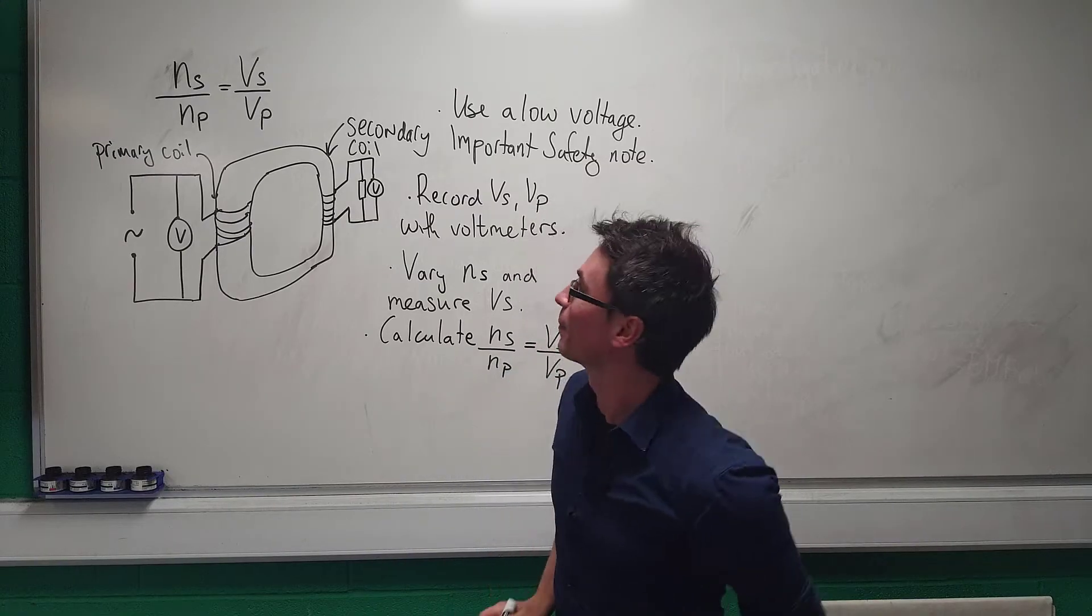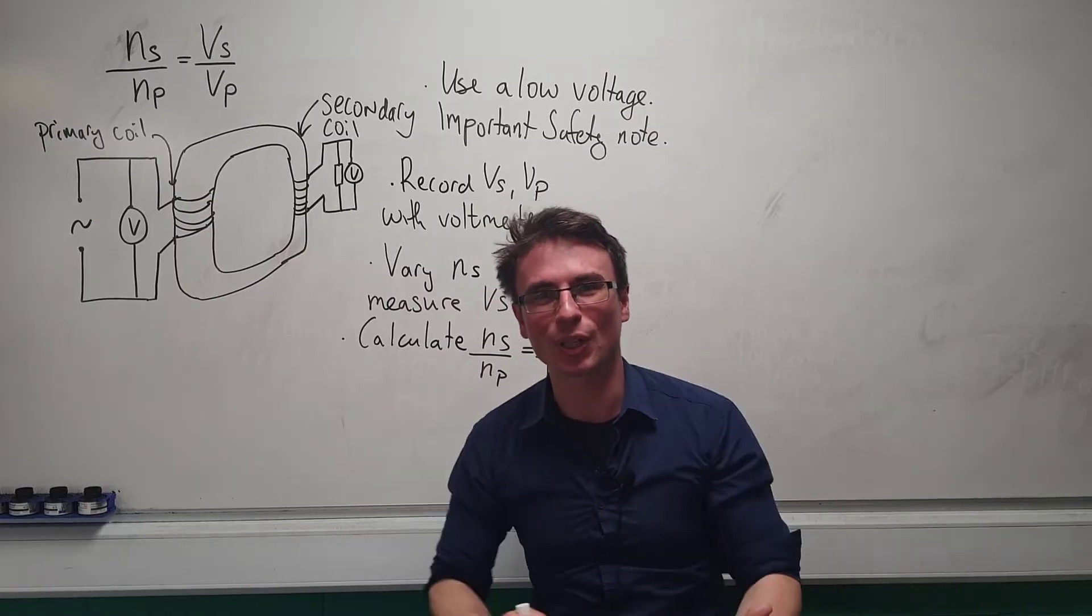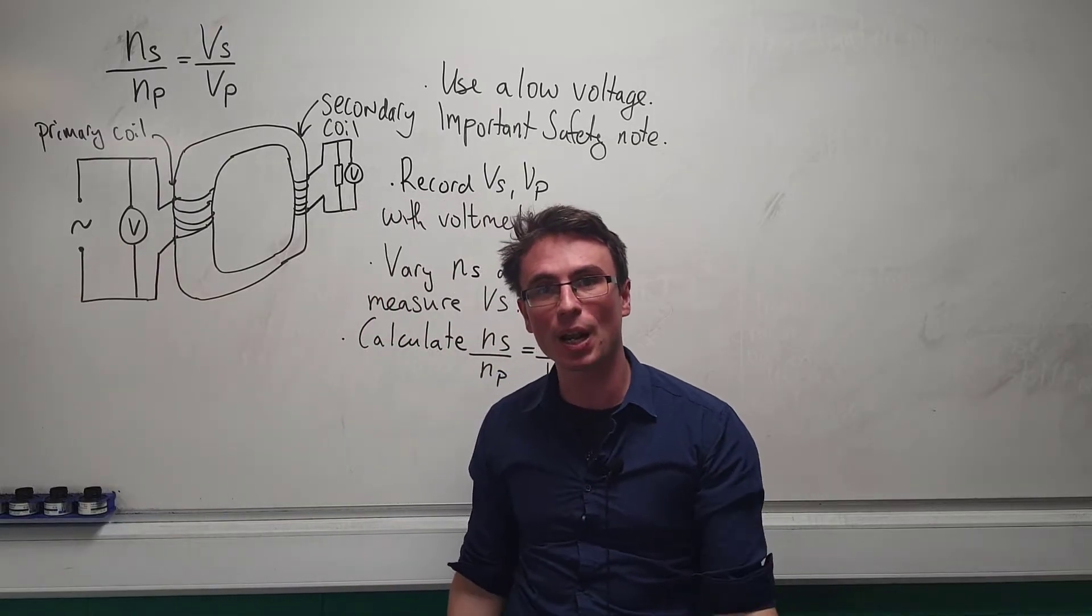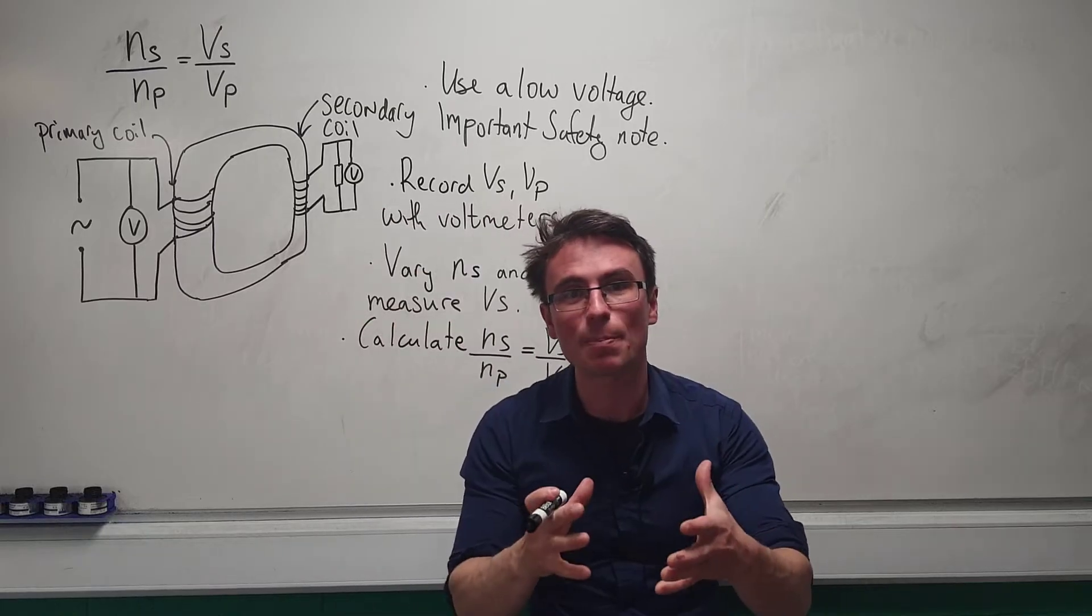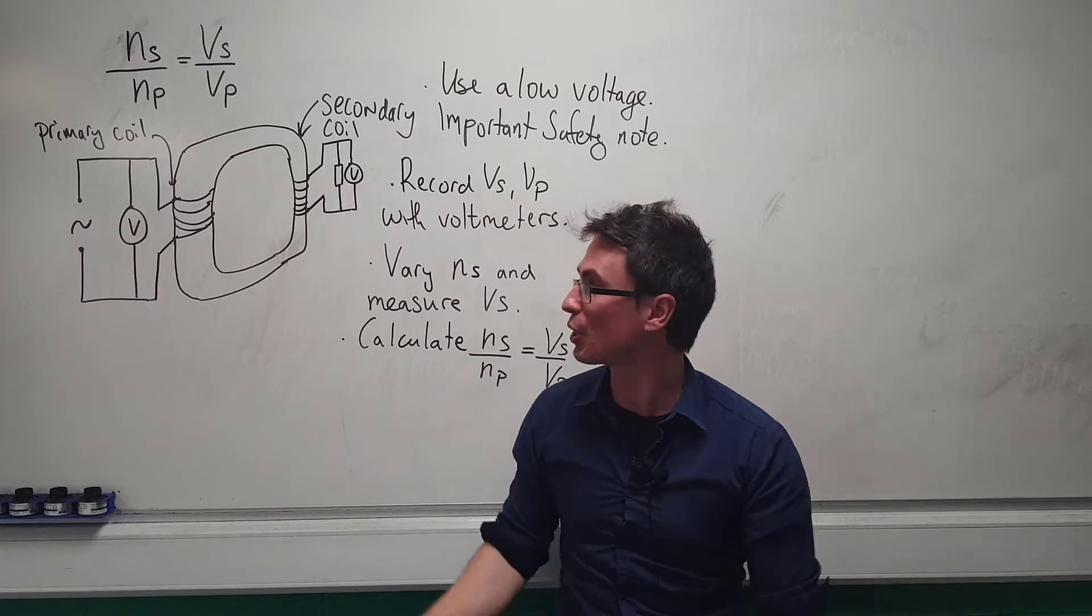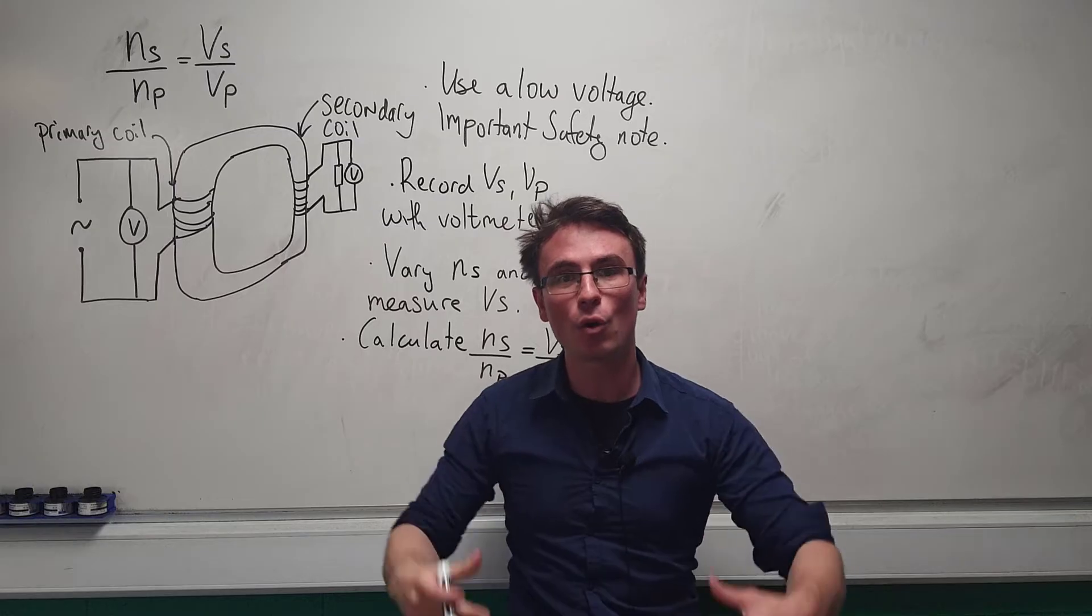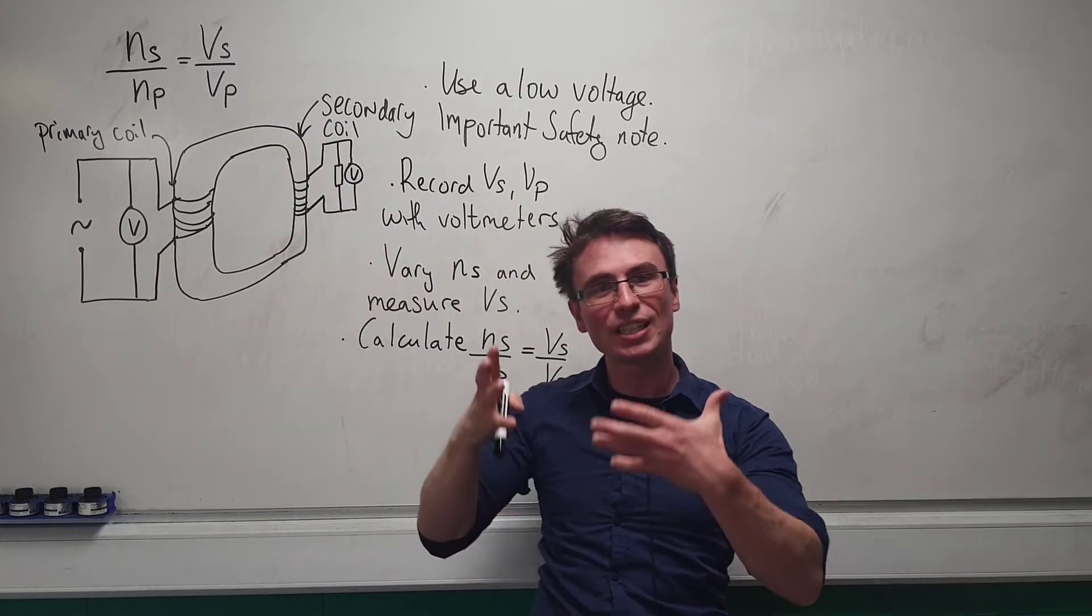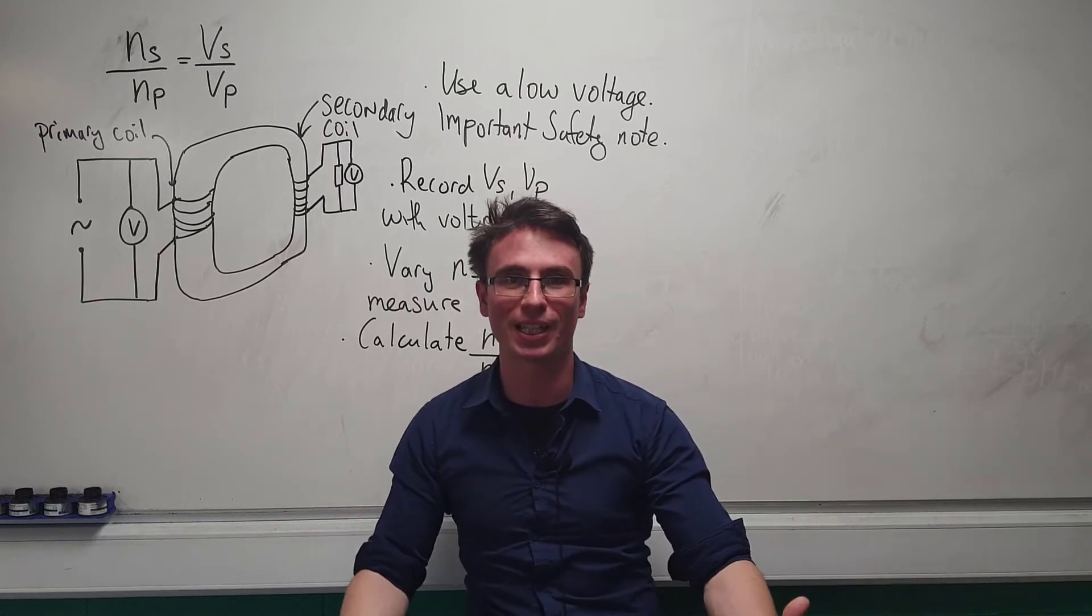Moving on to transformers, this is the transformer equation that we'll need to investigate. In order to do so, we typically build our own coils in the lab and we use an AC supply. When we do this in the lab, it's vital that we use an AC power supply connected to the primary coil because the current will be changing, meaning that the magnetic flux linkage around the primary coil will be changing, meaning that current will be induced in the secondary coil by Faraday's law because there will be a rate of change of magnetic flux linkage.